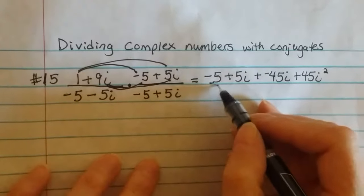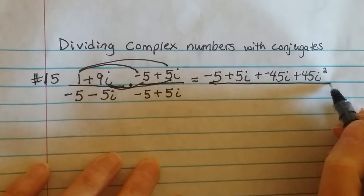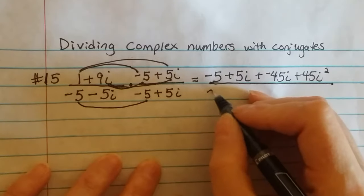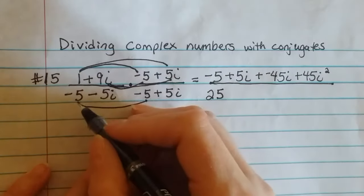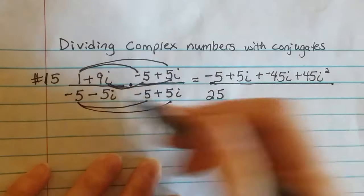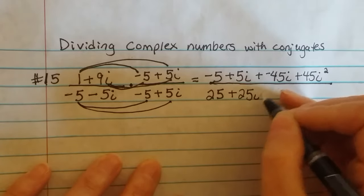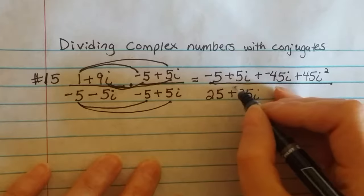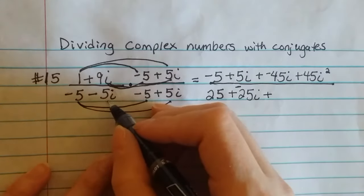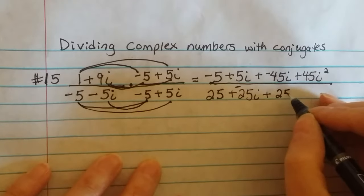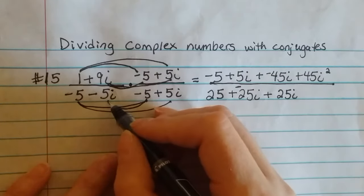And then I need to foil here on the bottom. So on the bottom, I'm just going to do the exact same thing. So -5 times -5 is 25. -5 times 5i is -25i. -5i times -5 is positive 25i. -5i times 5i is -25i².